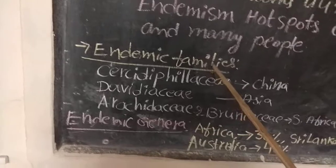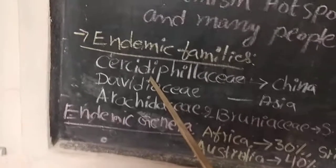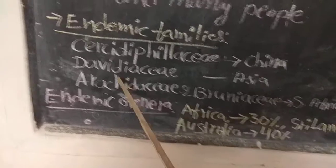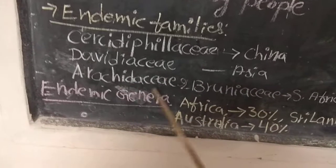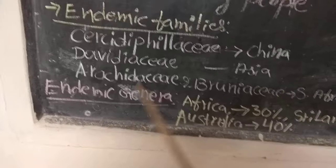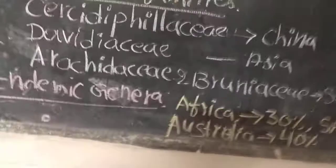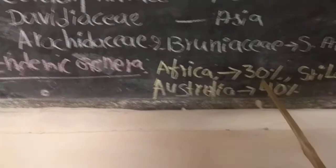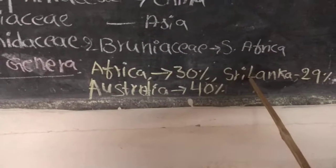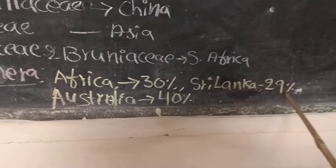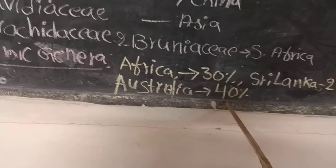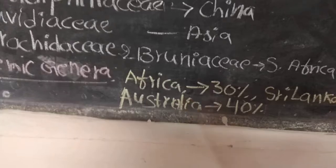Regarding endemic families: certain families are particularly endemic to particular phytogeographical regions. Cercidiphyllaceae is found only in China. Diewiaceae is found only in Asia. Arakiaceae and Bruniaceae are found only in South Africa. These families are called endemic families. Certain genera also show particular distribution to particular areas. Africa has 30% endemic genera. Sri Lanka, our neighboring country, though very small, has 29% endemic genera. Australia has the highest endemic genera at 40%.